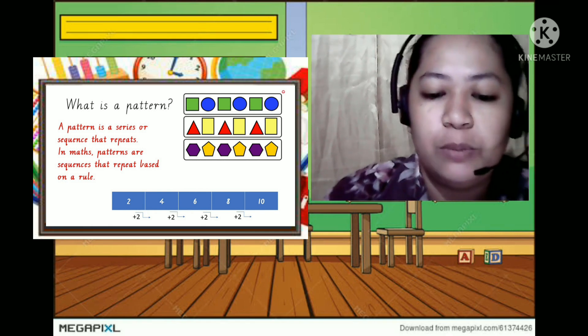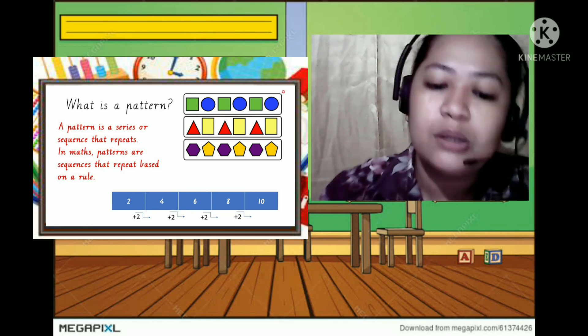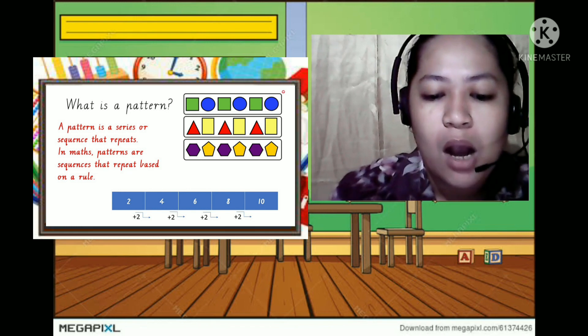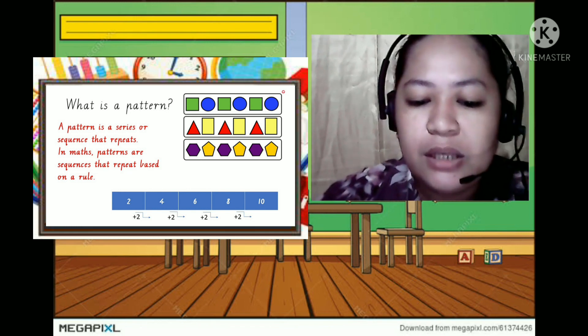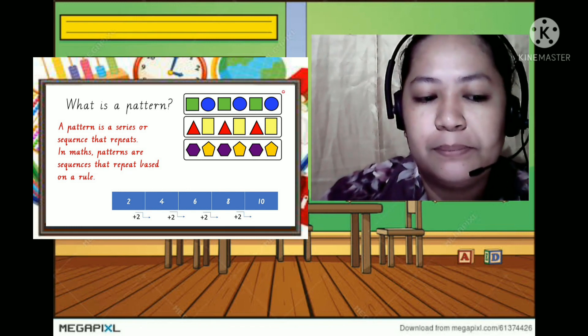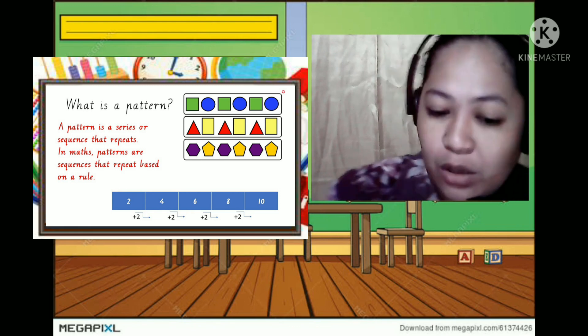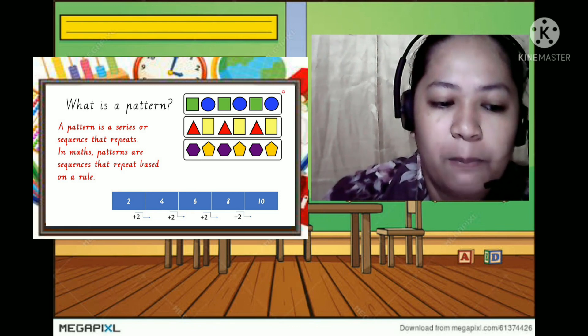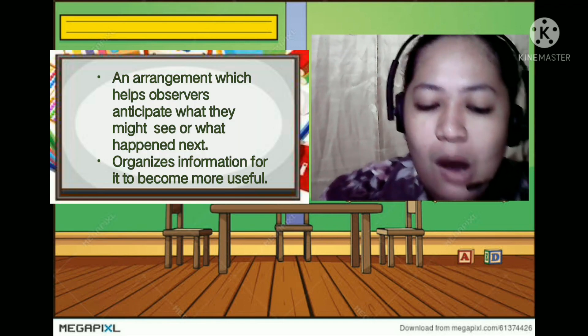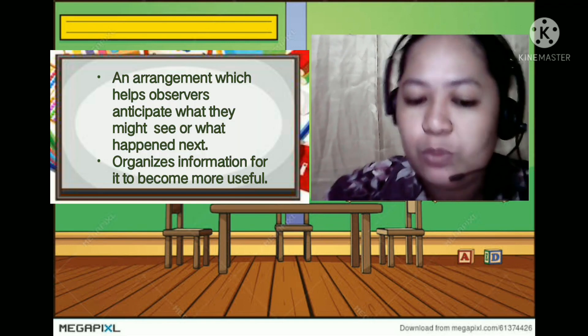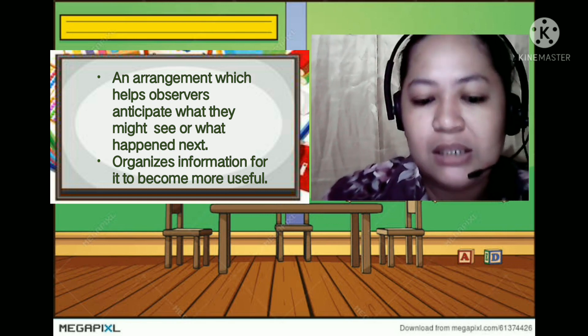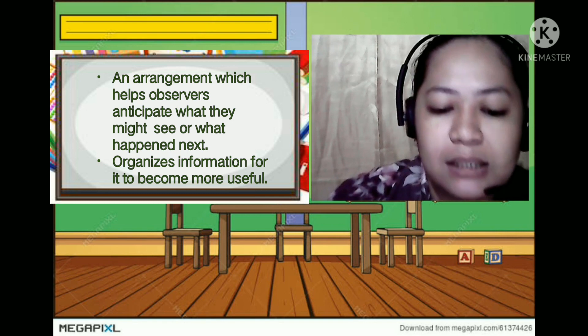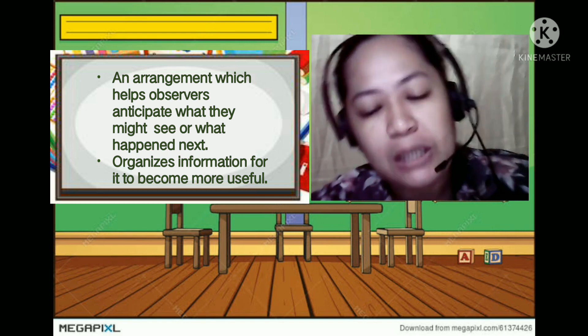As you can see in the picture it would be like square circle square circle, or triangle rectangle triangle rectangle, or these particular shapes. And then we can also use like two four six eight ten in patterns. So patterns is an arrangement which helps observers anticipate what they might see or what happens next. It organizes information for it to become more useful.